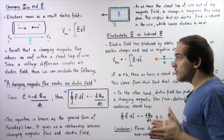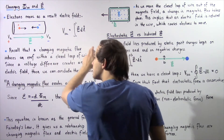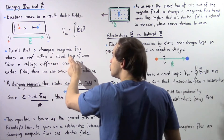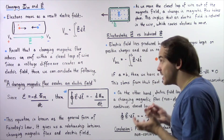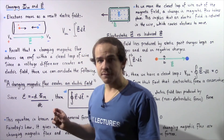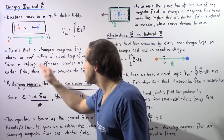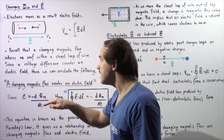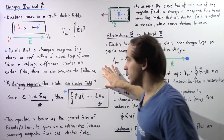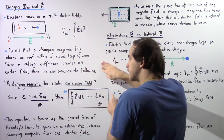In another lecture, we also said that a changing magnetic flux induces an EMF within a closed loop of conducting wire. It creates an EMF, which is the same thing as a voltage difference. And that basically implies, since a voltage difference creates an electric field, we have the following important principle: a changing magnetic flux creates an electric field.